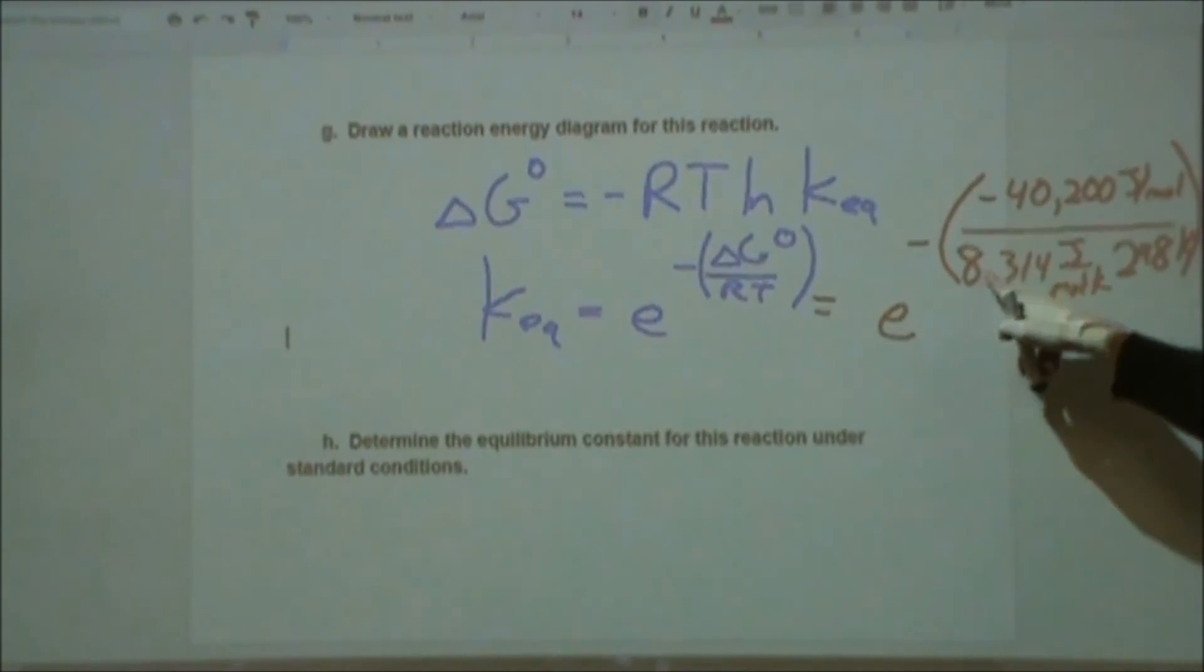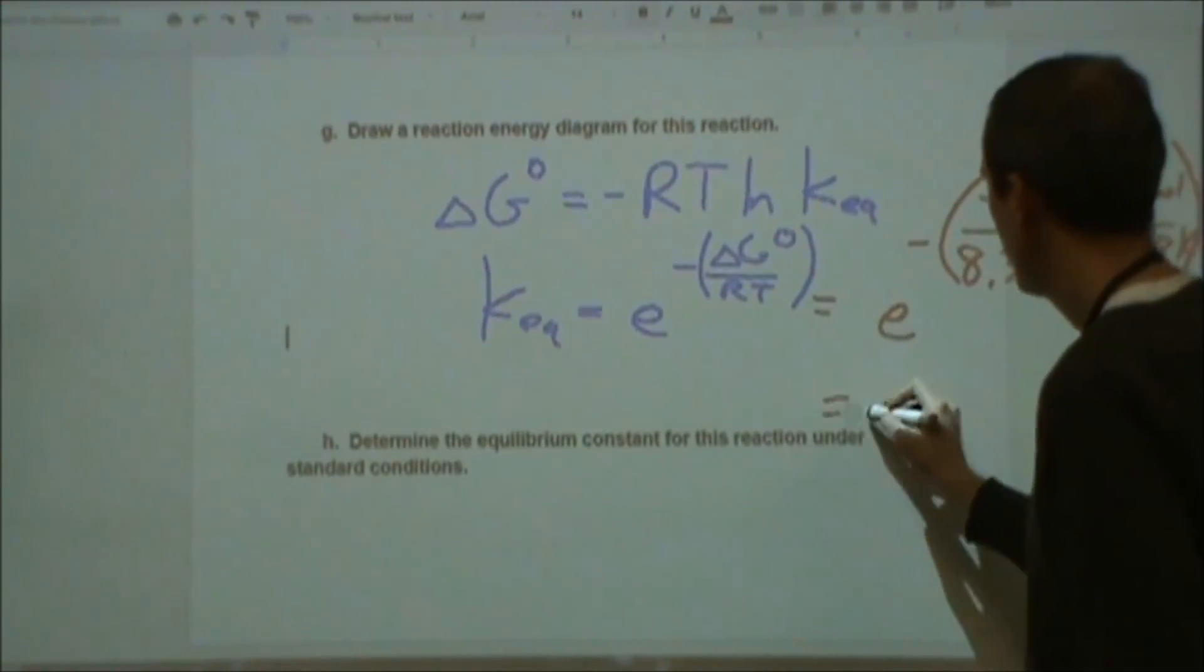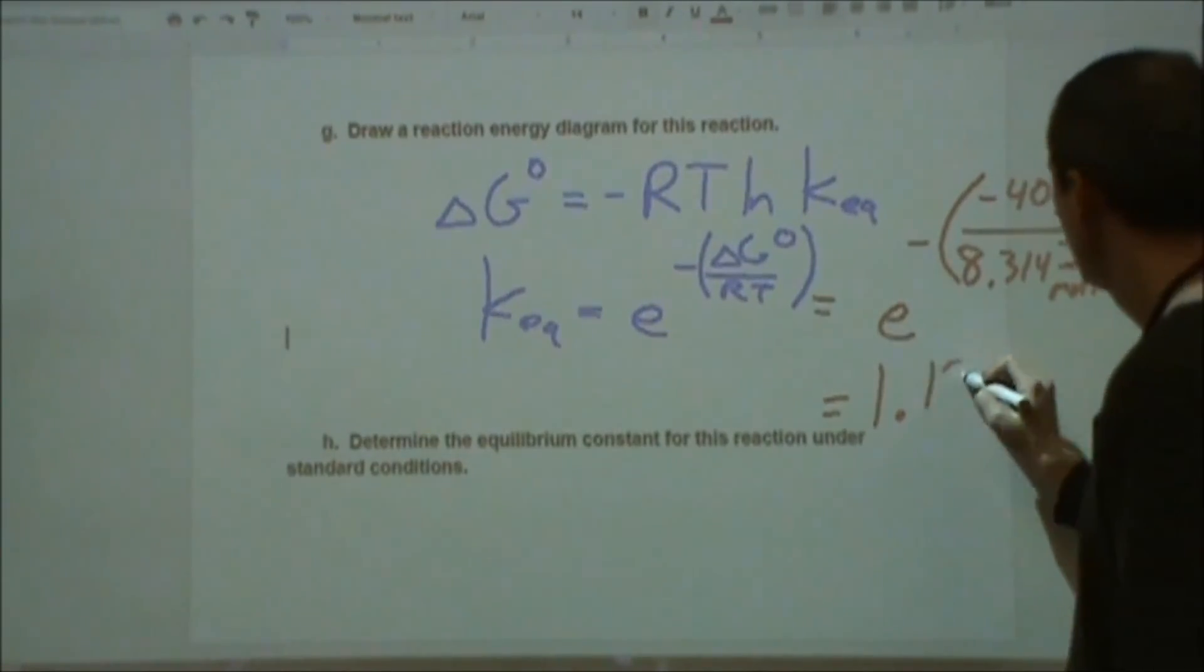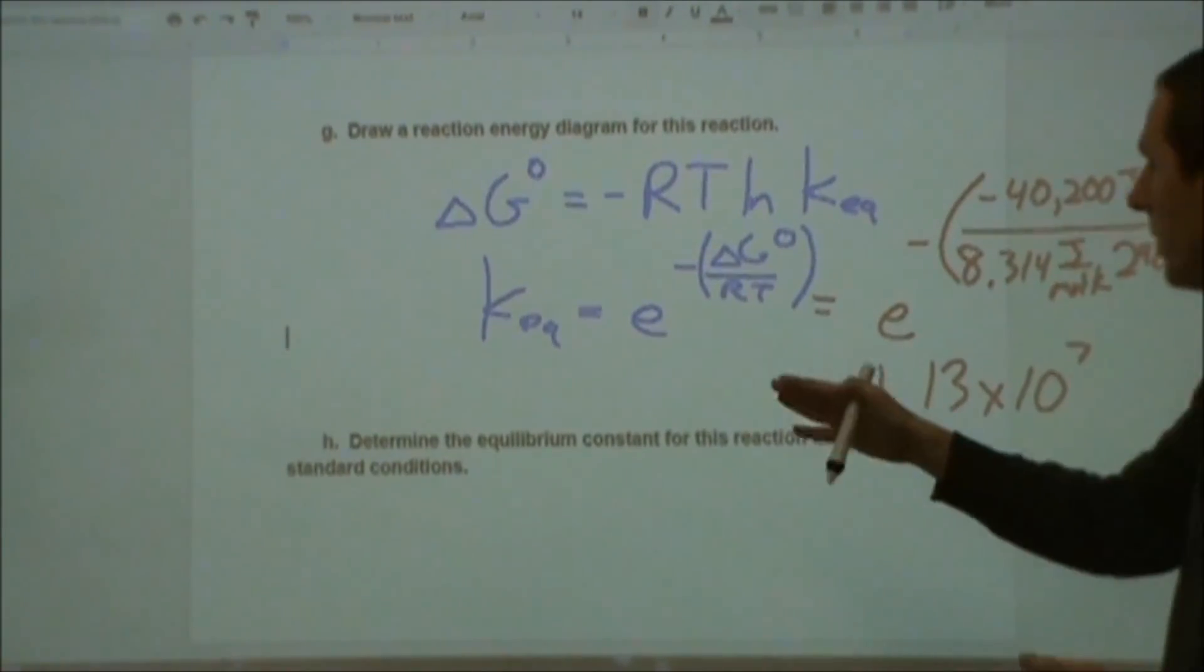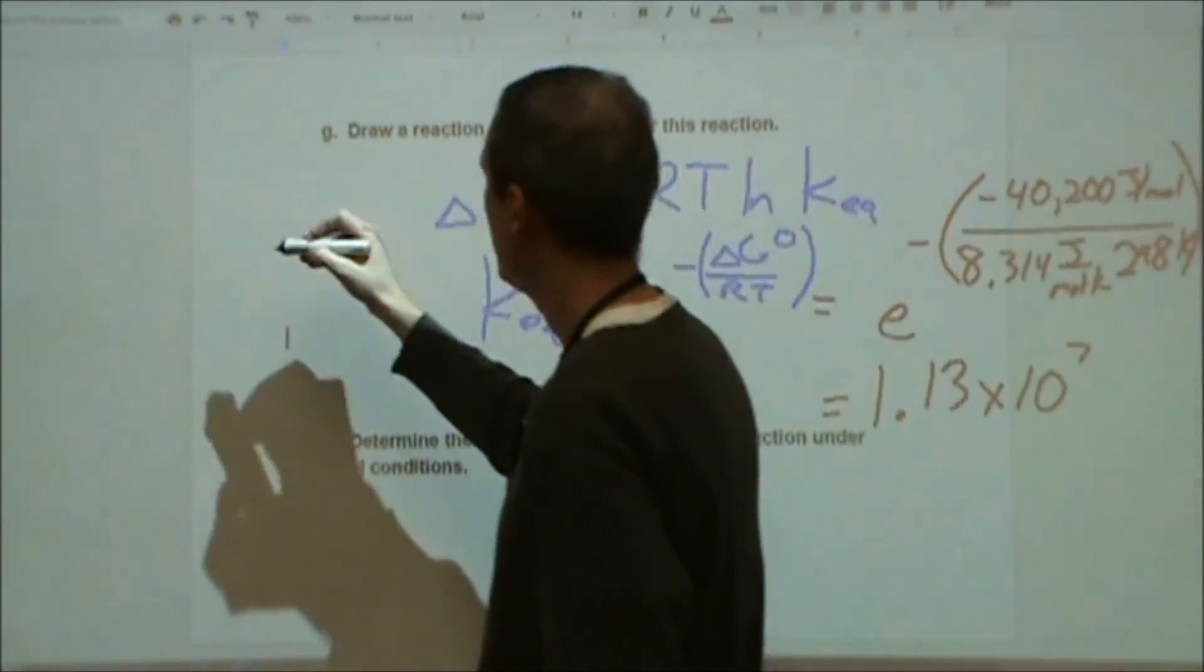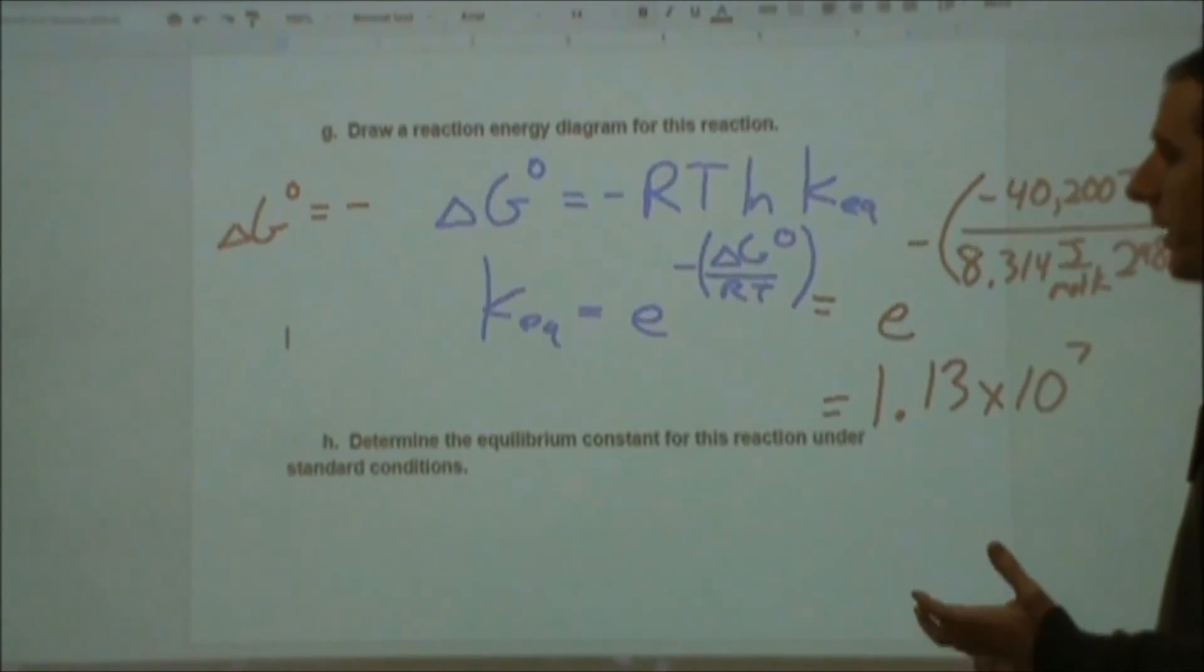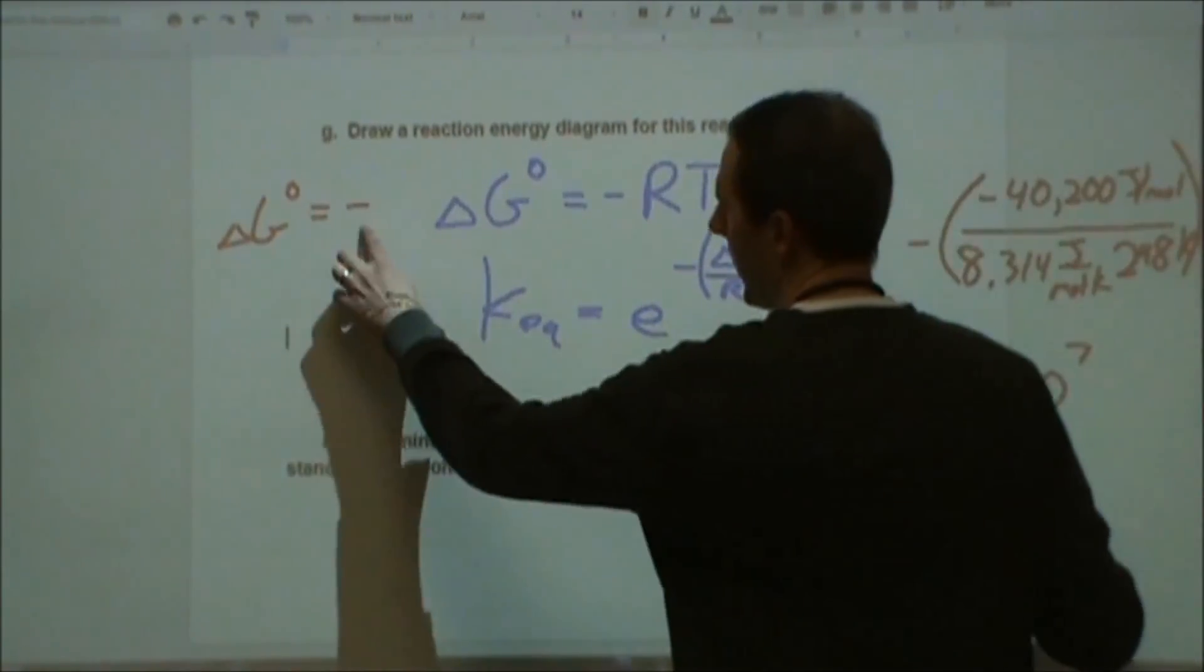So we have 40,200 divided by 8.314 divided by 298. The negatives here are going to cancel, and we're going to have a positive exponent. So we end up with a very large number. It's 1.13 times 10 to the seventh power. So what we see here is a very heavily product-favored reaction, where at equilibrium we'll have majority products and very few reactants. That makes sense from an equilibrium perspective, because our delta G being negative for the standard Gibbs free energy implies that our reaction is favorable towards forming products. It's going to be spontaneous in the forward direction given equivalent quantities of both things. So it's not a surprise that we see a large K value to accompany a negative delta G-naught value.